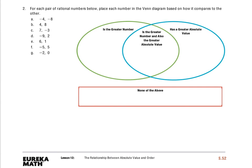I'll do a few of these to help out. The directions say for each pair of rational numbers below, place each number in the Venn diagram based on how it compares to the other. So the first thing I have to do is look at the chart — I know my Venn diagram is comparing similarities and differences. I see my titles here: one side is 'is the greater number,' so if the number is greater, that's where I'll put it. And if it has a greater absolute value, it'll go on the other side. But if the number is both, I would put it in the center because it's both the greatest number and has the greater absolute value.